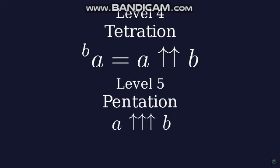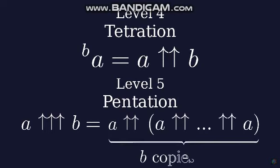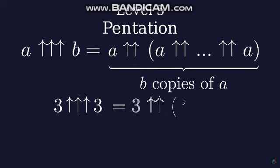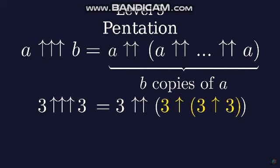Just like tetration is repeated exponentiation, pentation is repeated tetration. A pentation B is equal to A tetration to itself, B times. 3 pentation 3 is equal to 3 tetration 3 tetration 3. And 3 tetration 3 is equal to 3 to the power of 3 to the power of 3, and that is equal to more than 7 trillion.